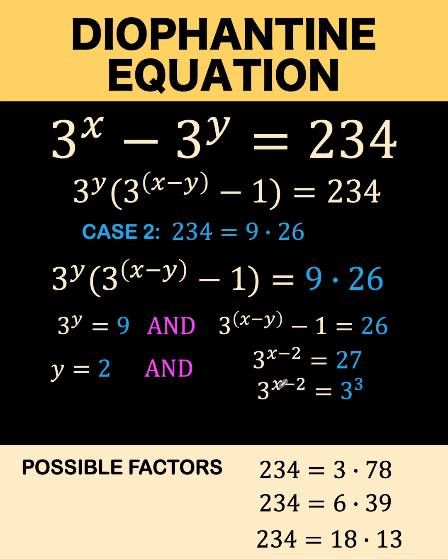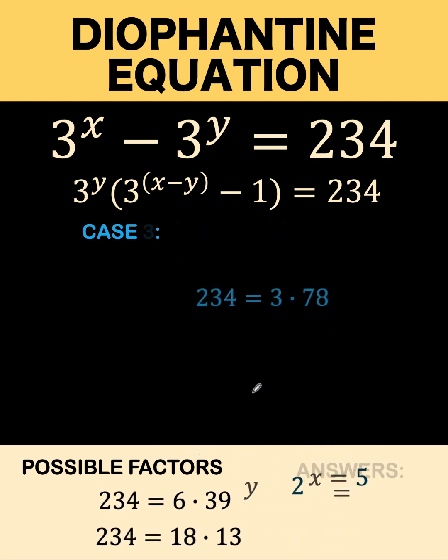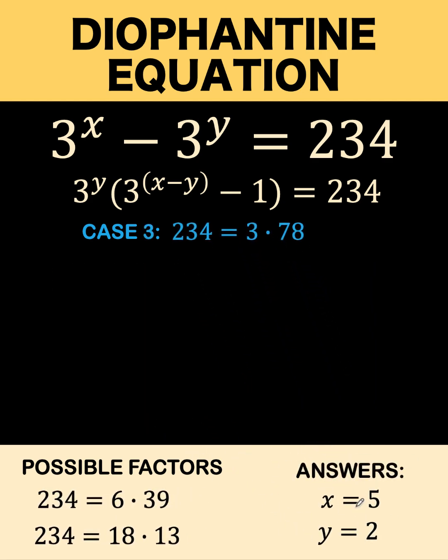So we want to find the value of x so that 3 raised to x minus 2 equals 3 to the 3rd. So that means this x must be 5, so that 5 minus 2 equals 3. So x equals 5, and we found one ordered pair solution of this Diophantine equation. Let's remember that value here.